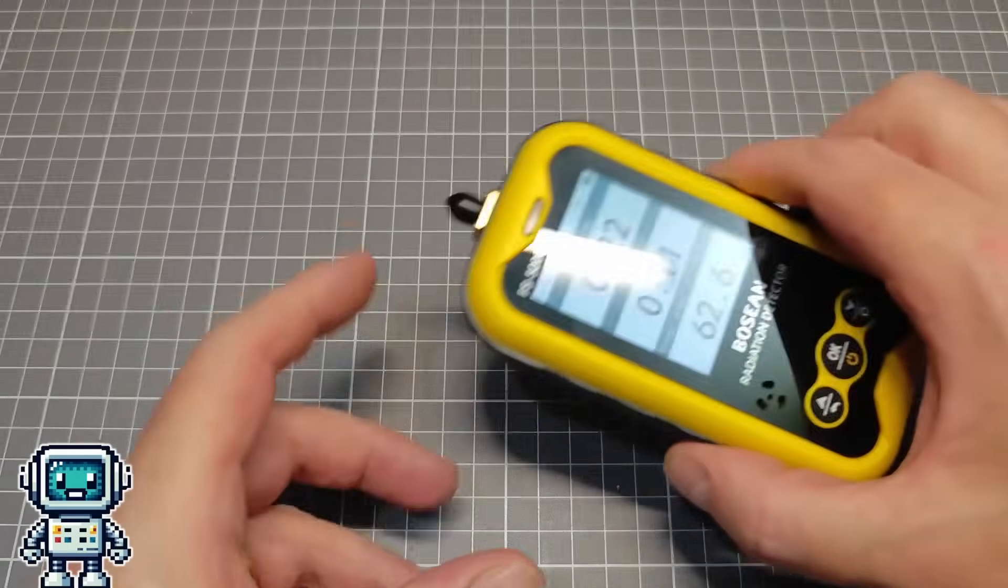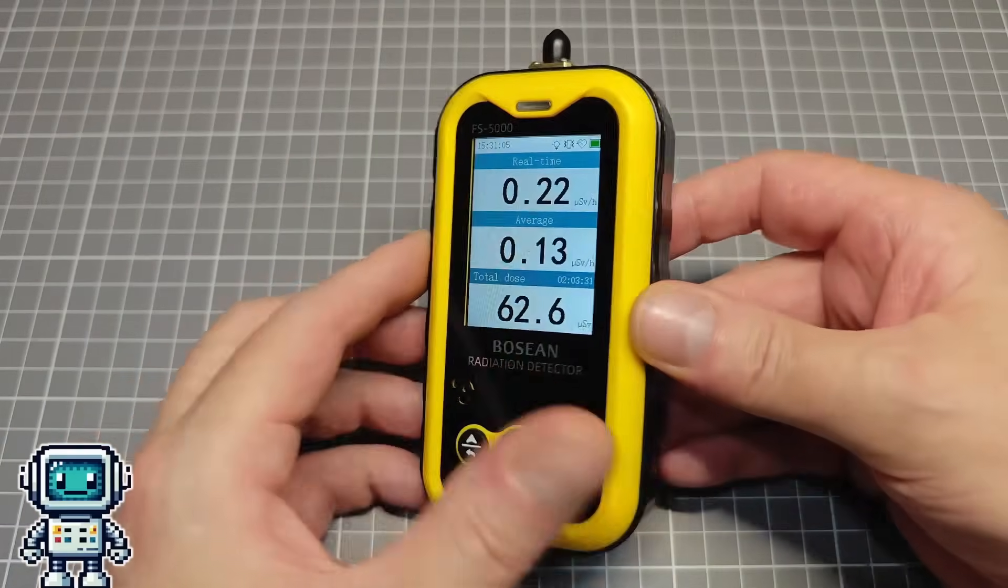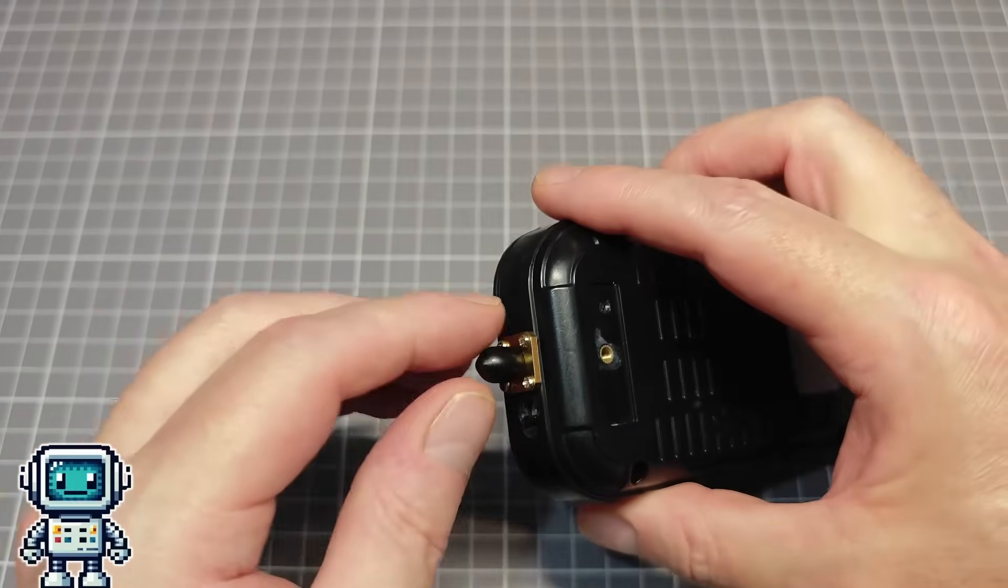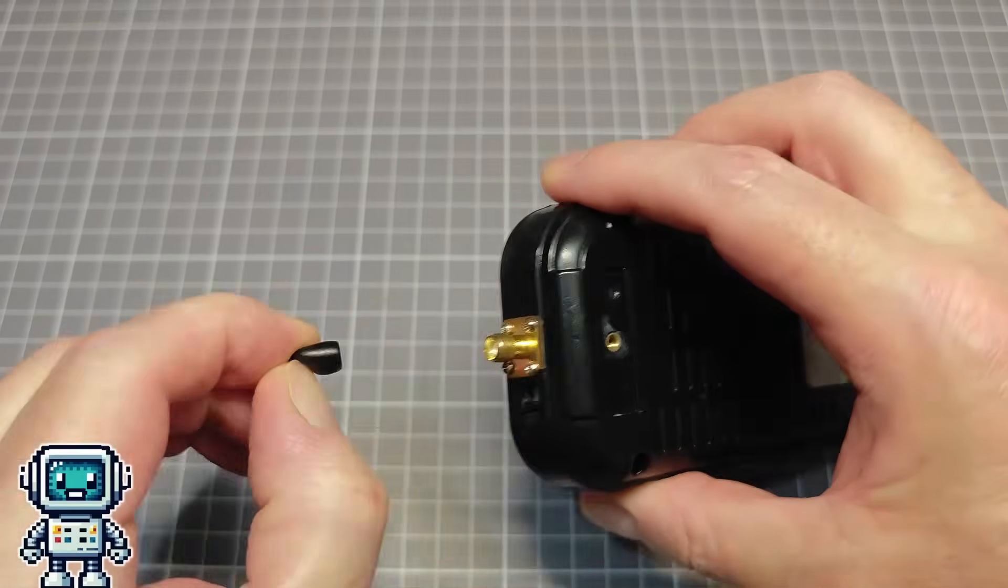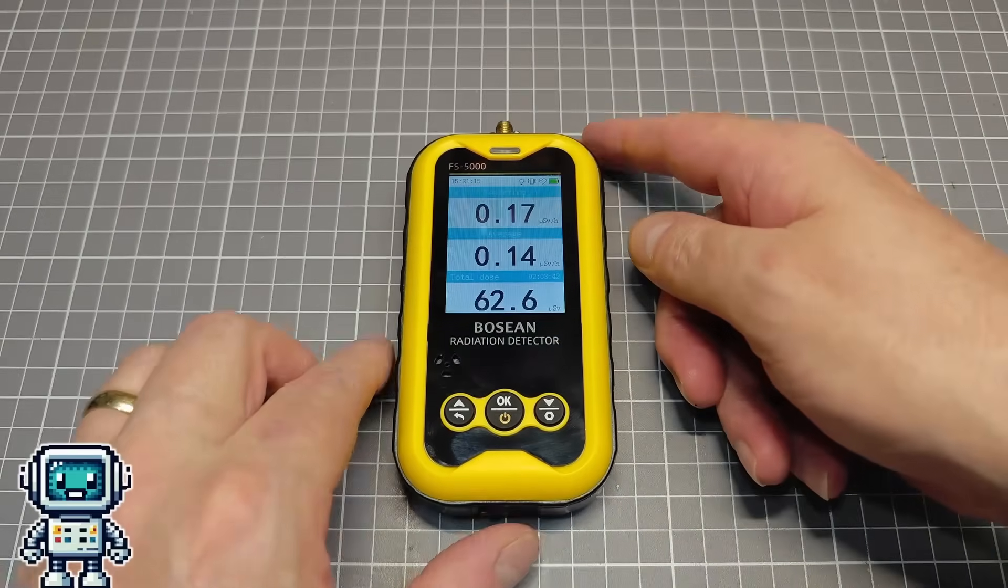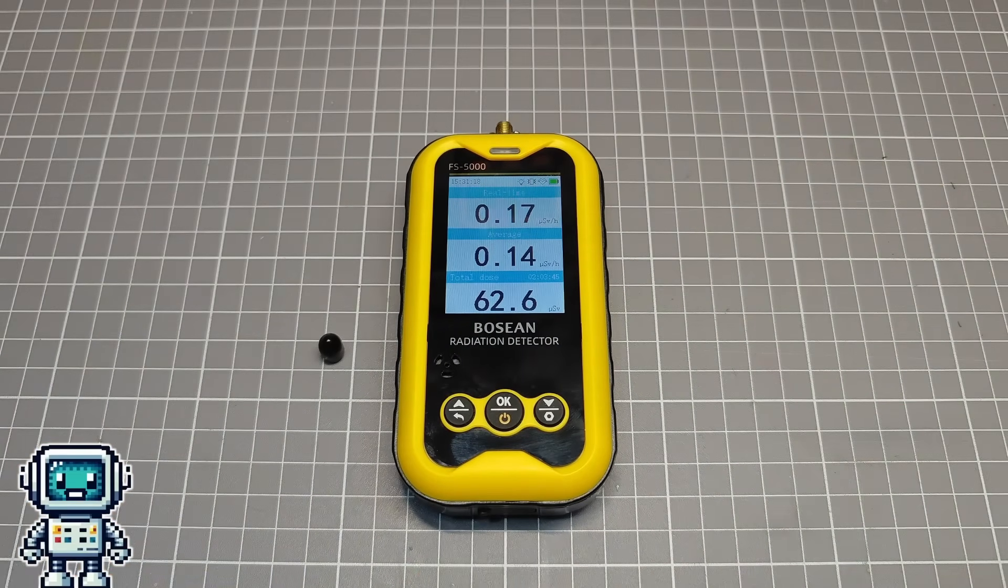Ok, we now have a pancake Geiger-Muller tube mounted in a glorified shower head. We also have a Geiger counter that has a special salad inside, so we should get on and do some testing of our new toy. Right, let's figure out if this was worth the time and effort, not to mention the sad demise of an old friend.